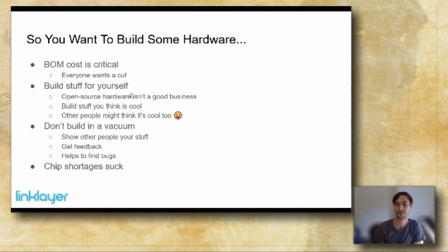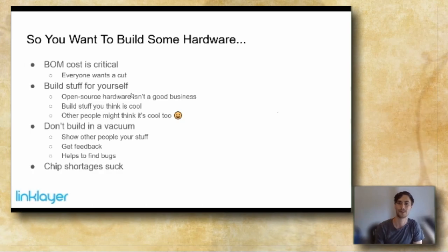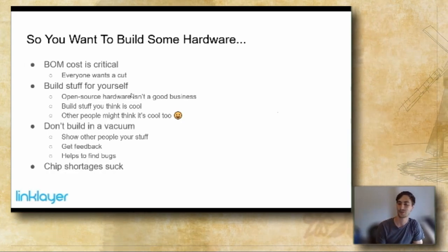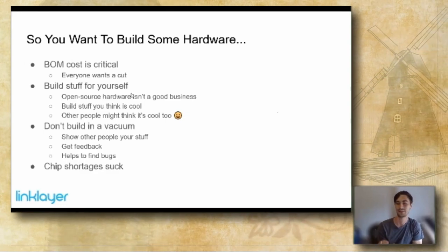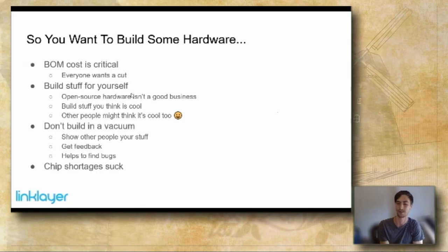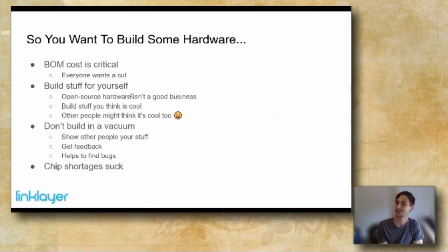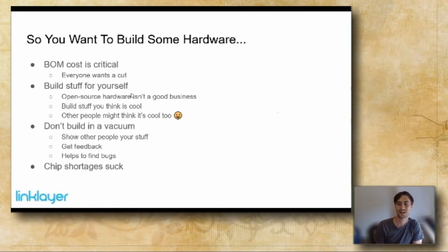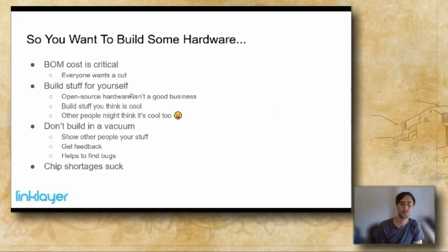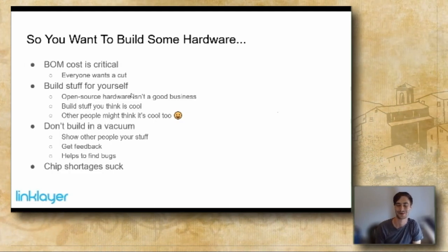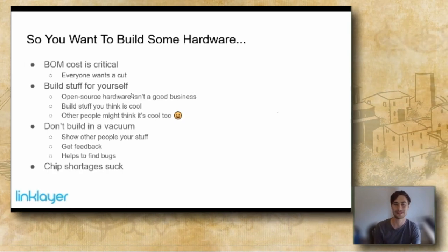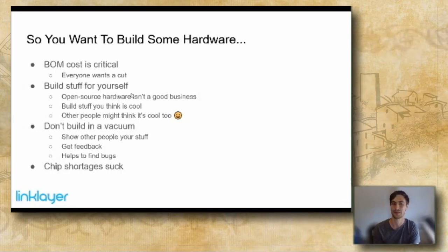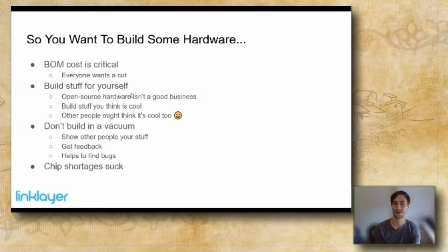A few words of advice: bill of materials cost is critical because everyone in the chain needs their cut. If you want to sell through Mouser, expect a certain markup. If your parts cost $50, you'll need to sell for at least two to three times that to make sense. I recommend building it for yourself first. Open-source hardware is not a great business — you won't make a lot of money — but if you build something you think is cool, other people probably will too. There's a bigger audience on the internet than you think, and it can help you land conference talks. Don't build in a vacuum: show people what you're building, get feedback, and have people help debug.